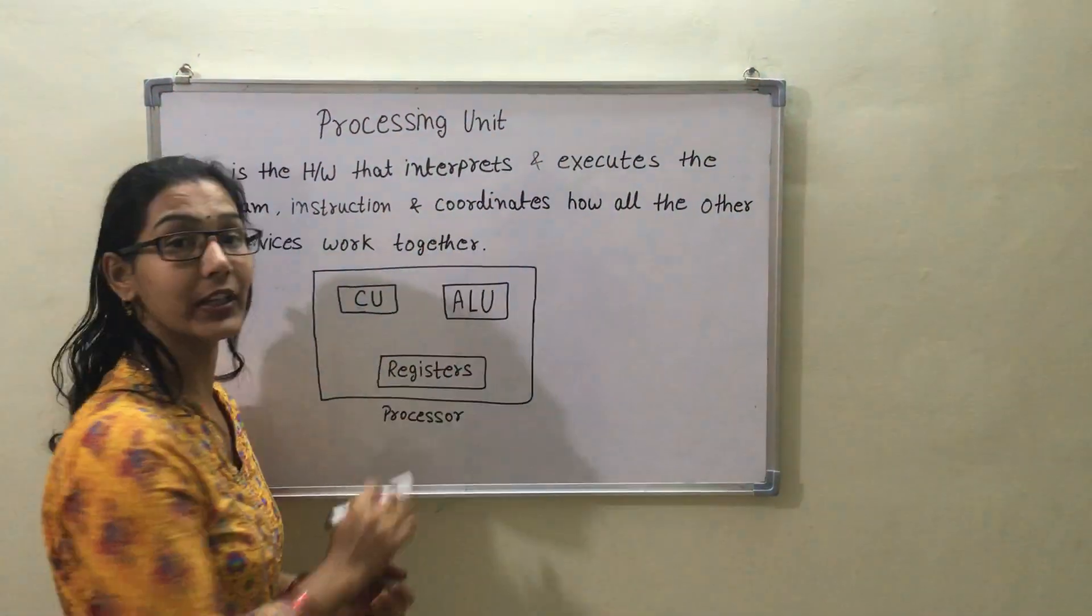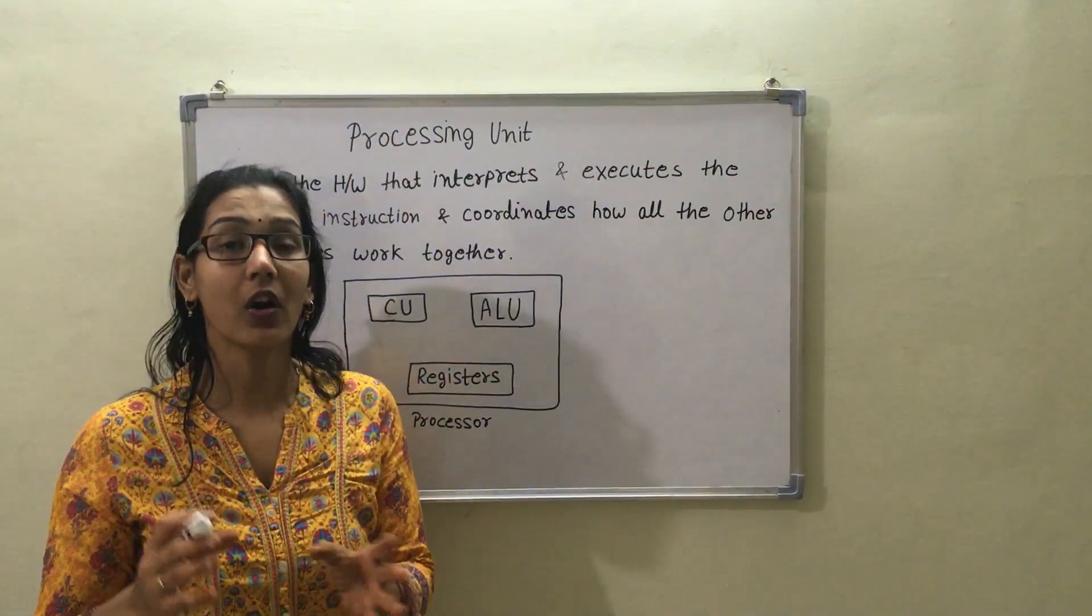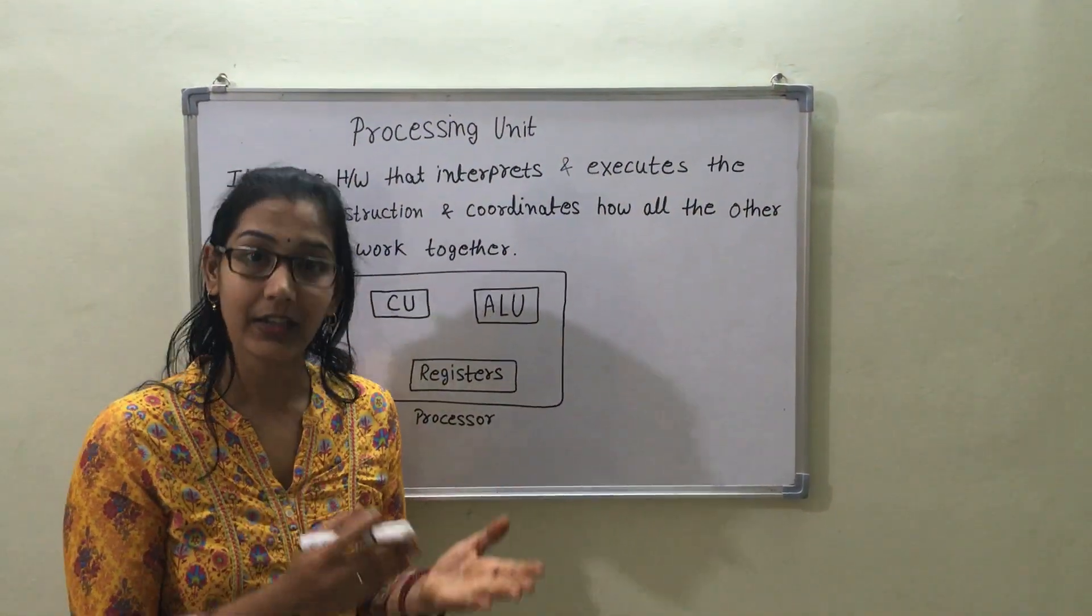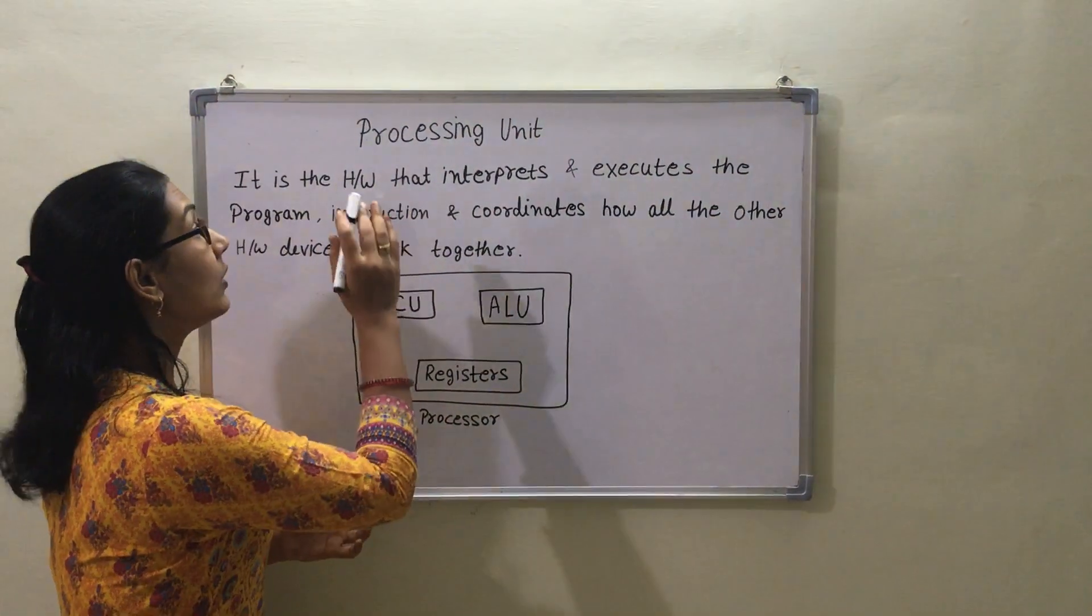Coordinate means synchronization between all other devices like input device, output device, and memories. For this reason, it is called the brain of the computer.